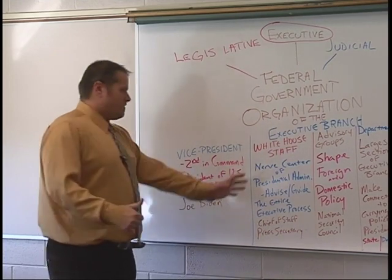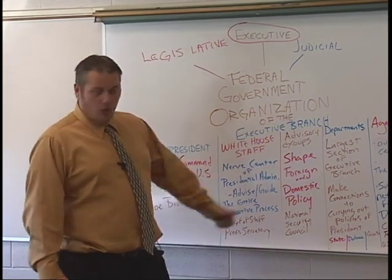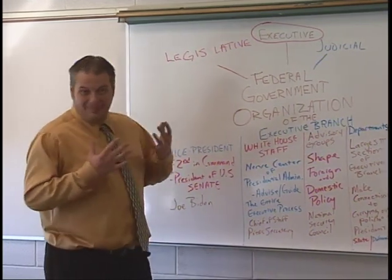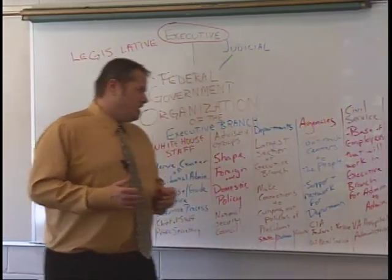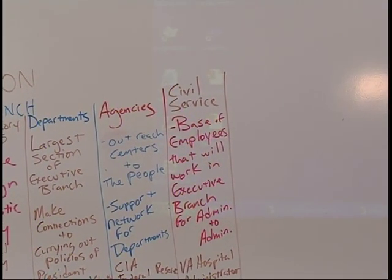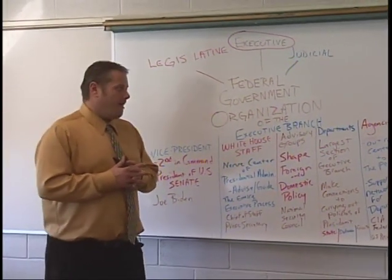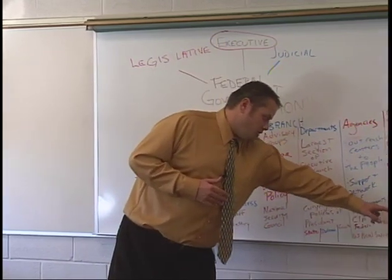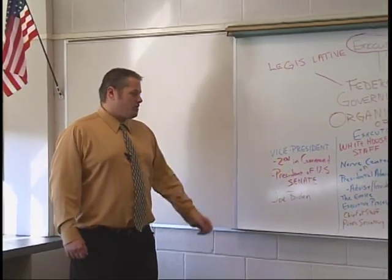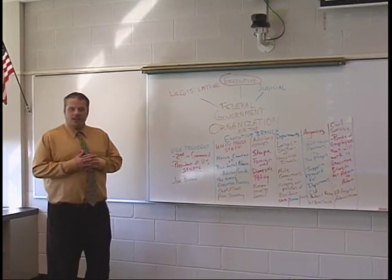And lastly, who takes up all of these jobs? Obviously the vice president, White House staff, advisory groups, departments, and leaders are chosen by the president and go with the president. However, there is a system of hiring qualified individuals to work within the government system, mainly in the executive branch, and that is the civil service system. It is the base of employees that will work in the executive branch from administration to administration. They will get a job — let's say in 1984 under President Reagan — and many of those individuals are now in their 26th year of work in the Obama administration, working, for example, in the Veterans Administration Hospital System as administrators. So as you can see, the vice president, White House staff, advisory groups, executive departments, executive agencies, and the civil service system organize and comprise the executive branch.